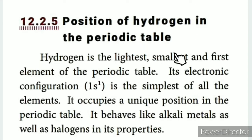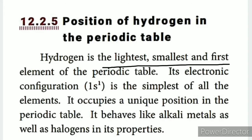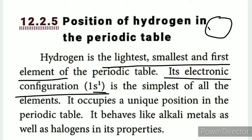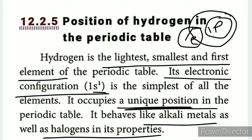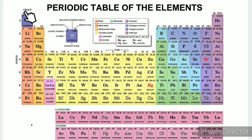The position of hydrogen in the periodic table: hydrogen is the lightest, smallest, and first element of the periodic table. Its electronic configuration is the simplest of all elements - 1s1. It has no neutron in its nucleus.